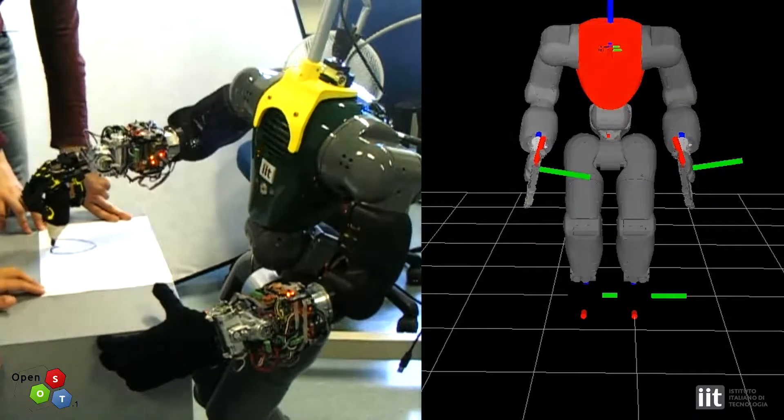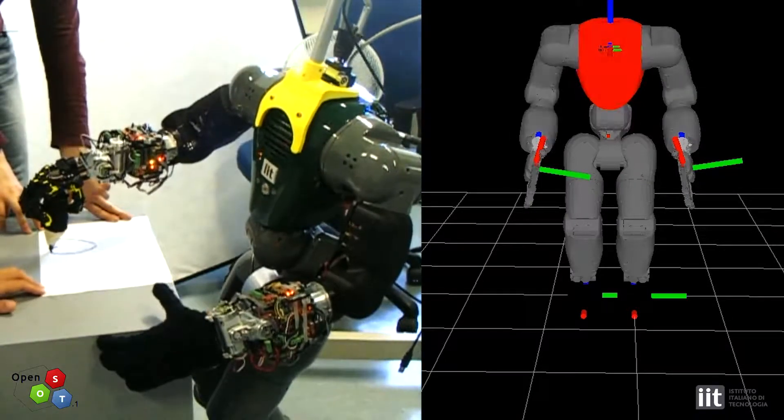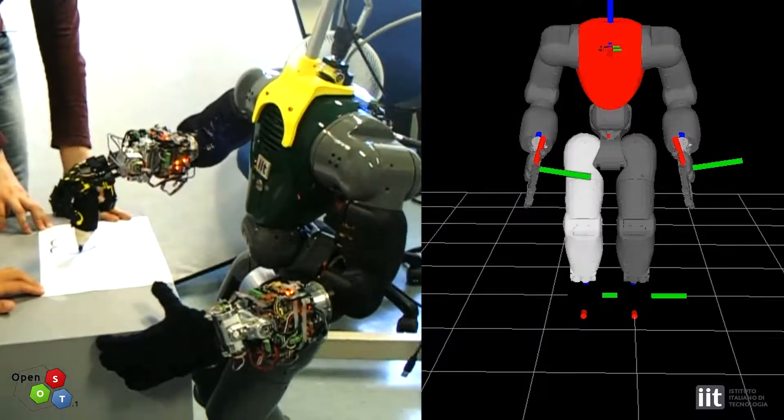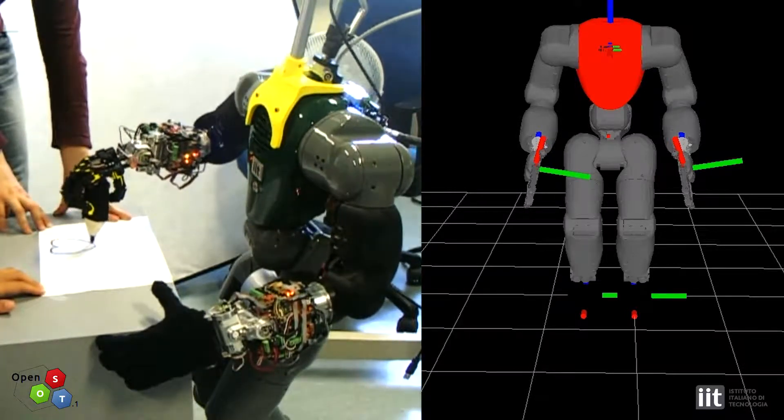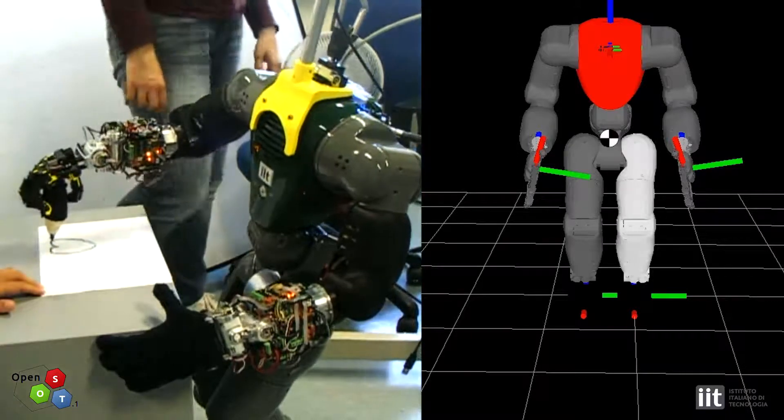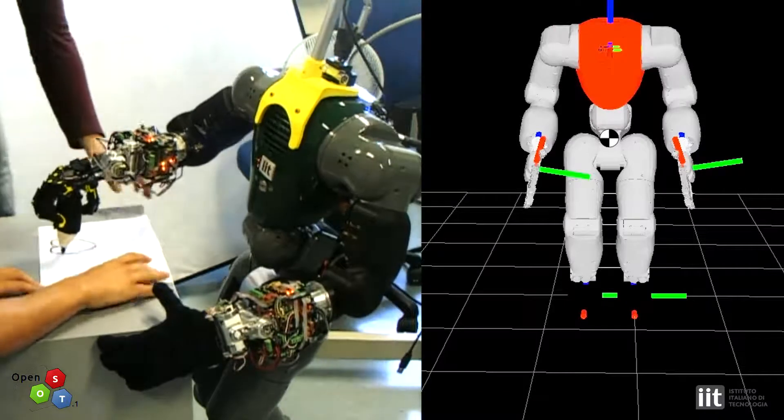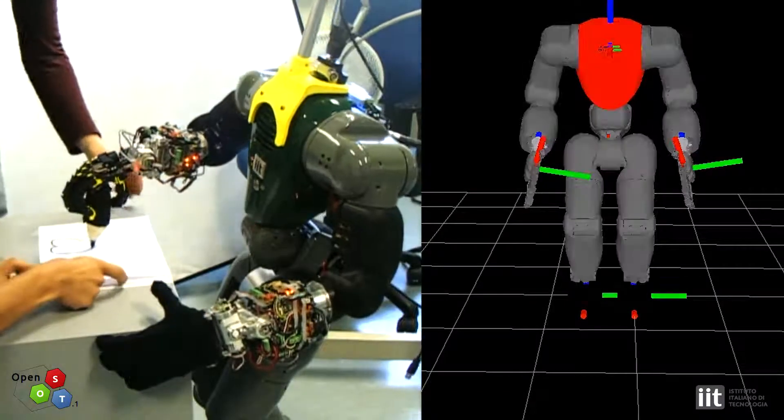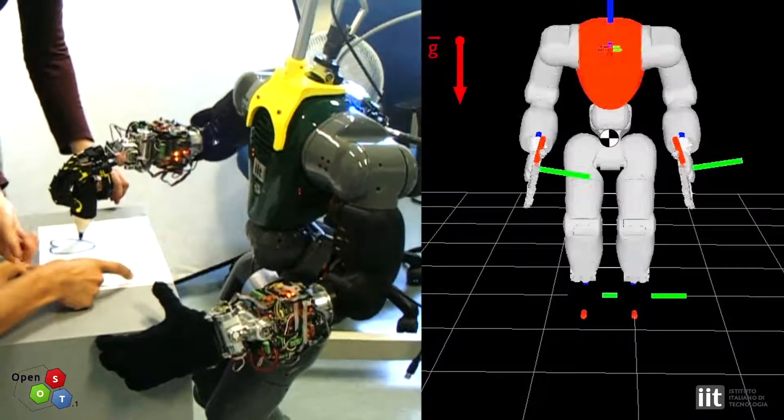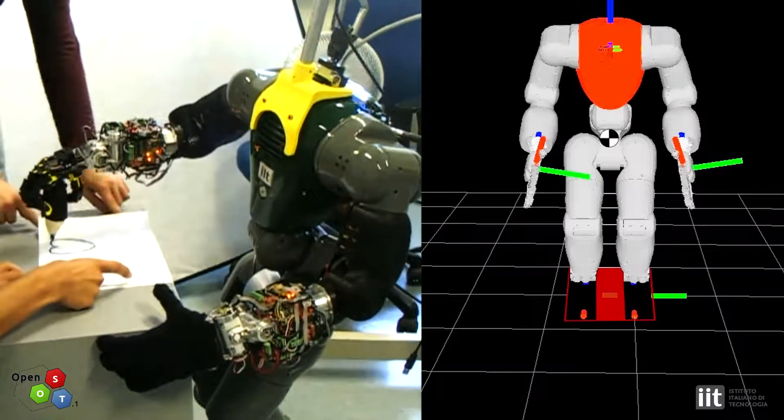Furthermore, we specify constraints on joint limits, joint velocity limits, center of mass velocity and position. In particular, the center of mass position is constrained to be always inside the support polygon given by the two feet in contact with the ground.